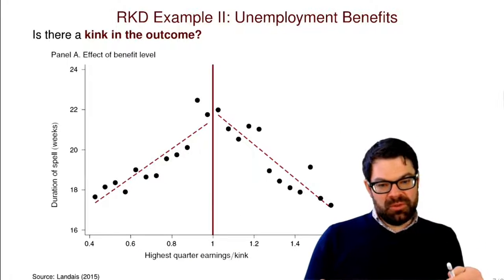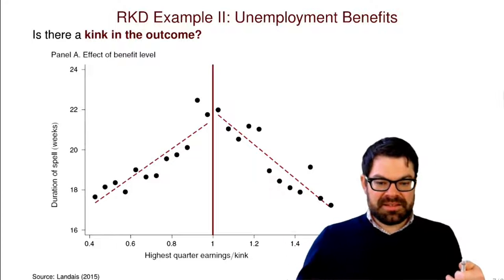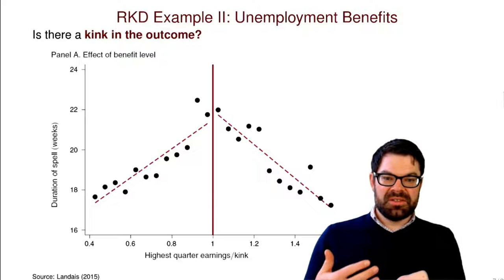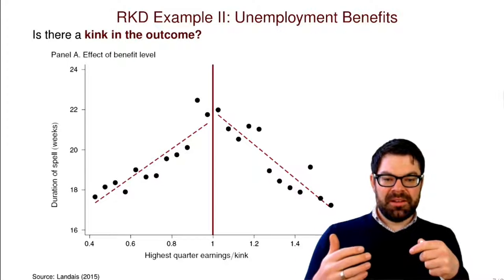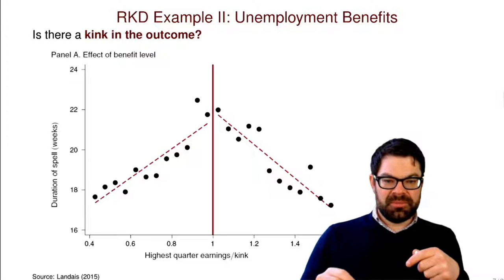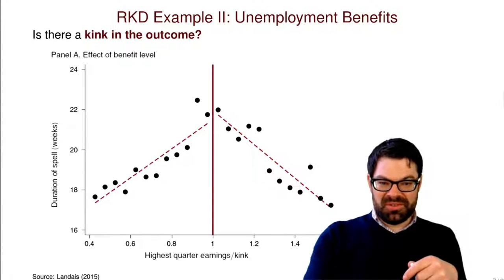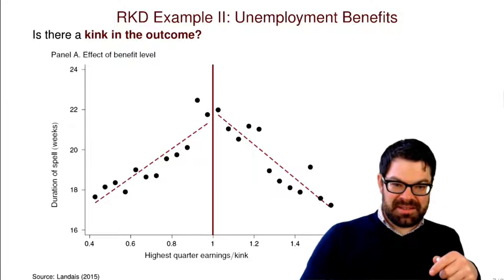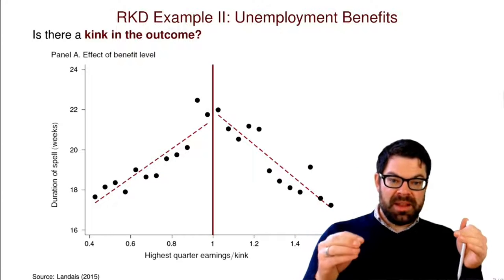It's as good as randomly assigned whether you're above or below the threshold — though whether that's true depends on context and how much people can manipulate their taxable income. We want to get at the treatment effect of receiving higher benefits by comparing people just above and just below that kink point. We can look at the reduced form and see whether there is a noticeable kink. This is a classic question in labor economics: whether the duration of unemployment is related to benefit generosity.